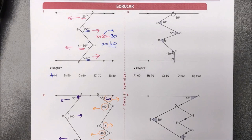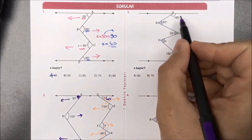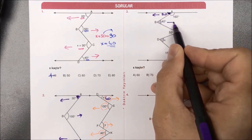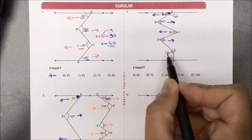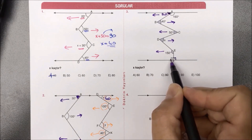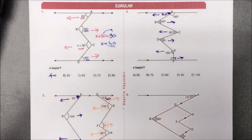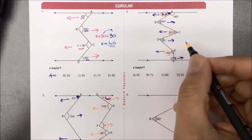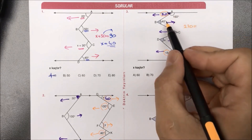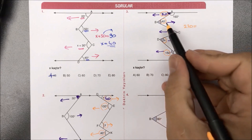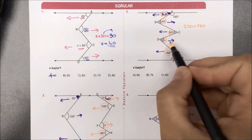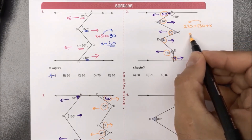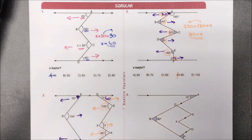Üçüncü soruya geldik: verilenlere göre X kaçtır diye sorulmuş. Geniş açıyla başlayamıyorduk; bunu hemen 180'e tamamlıyoruz: 20. Sola baktı, sağa baktı, sola baktı, sağa baktı, sola baktı; bunun sağa bakması lazım. 90'ı 180 derece tamamlarsak o da 90 gelecek. Sol tarafa bakanlar: 20 var, 50 var, toplam 70; artı 150 ne yapacak? 220. Sağ tarafa bakanları toplayalım: 40 var, X var ve 90 var; 40 ile 90'ı toplarsak 130, bir de X'imiz var. 220'den 130 çıkarsa aradığımız X yanıtı 90 olarak bulunmuş olur.